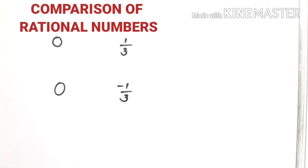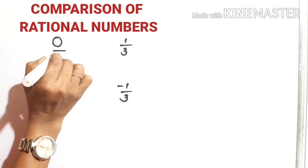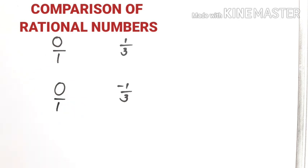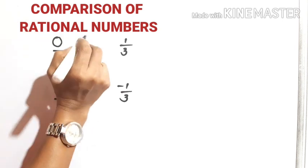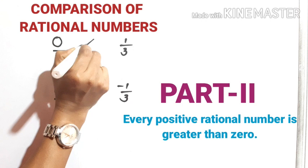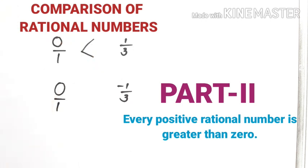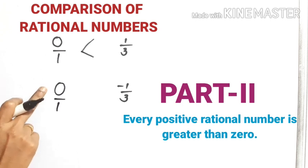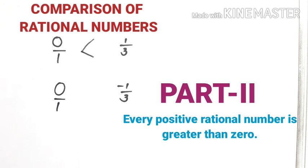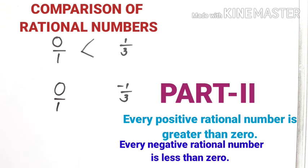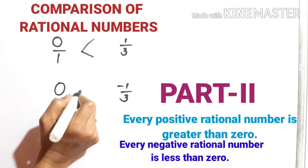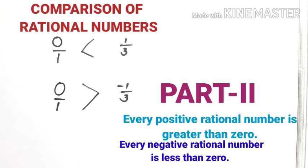See children, what about 0? Is it a rational number? Yes. Just before we discussed — 0, we can write it as 0 by 1. Here also, 0 by 1. Now, we have to compare 0 by 1 and 1 by 3, a positive rational number. Every positive rational number is greater than 0. Therefore, 0 by 1 is less than 1 by 3. Here we have 0 and negative — 0 by 1 is greater than minus 1 by 3.